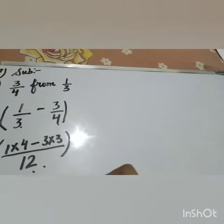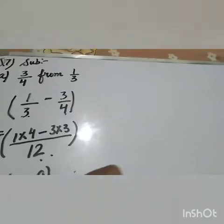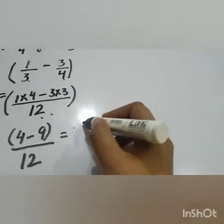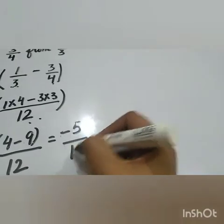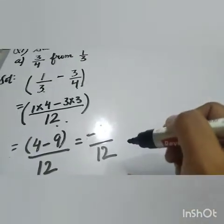So plus minus becomes minus. 9 minus 4, that is 5. Sign will be minus. So the answer is minus 5 by 12. This is your answer.